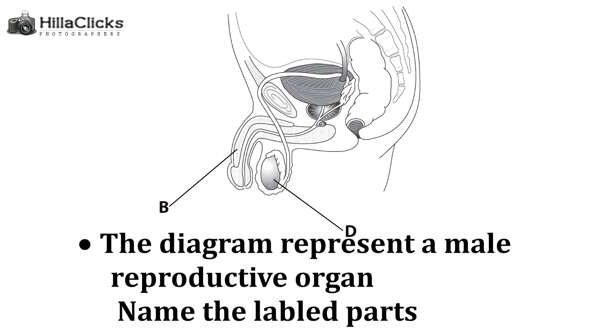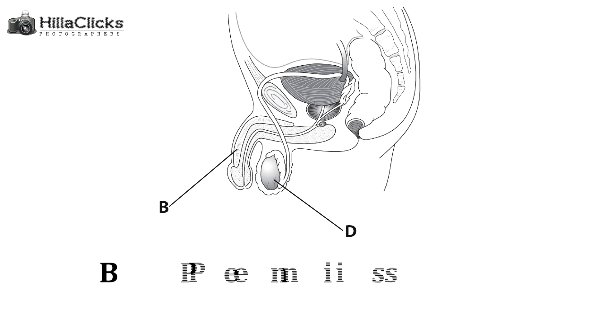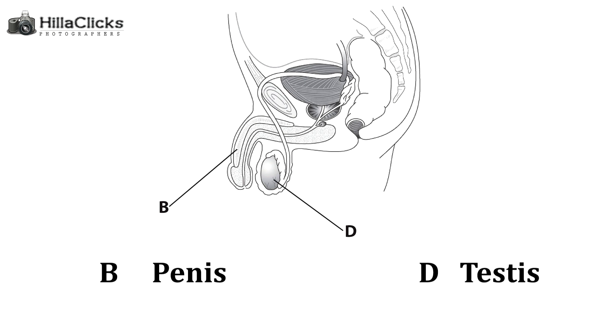The diagram represents a male reproductive organ. Name the labeled parts: B - penis, D - testis.